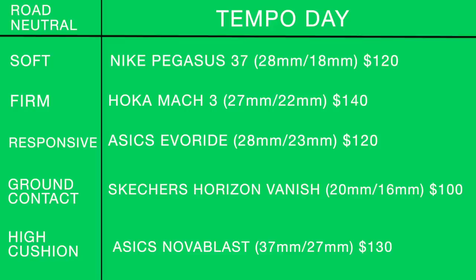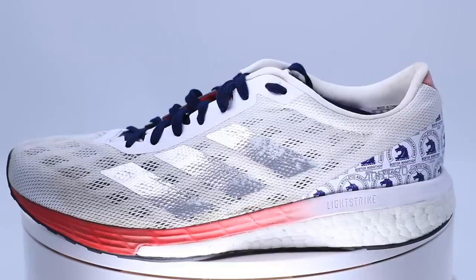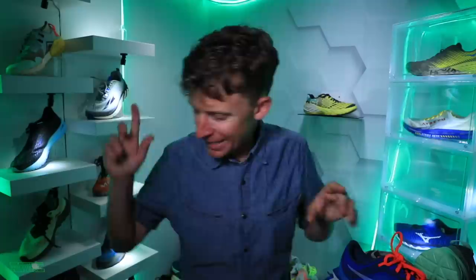Pacing context: tempo days for me are around 6-minute mile pace, easy days are 8:15 to 9-minute pace, and threshold days are around 5:20 to 5:30 per mile. For threshold with a soft landing: the Adidas Boston 9 — 26mm heel, 16mm forefoot, $90. For threshold with a firm landing, I went back to 2019: the Hoka Carbon Rocket — 28mm heel, 27mm forefoot for just a 1mm drop, $160. It had a very firm ride and I didn't love that, but it's a carbon fiber plate shoe.